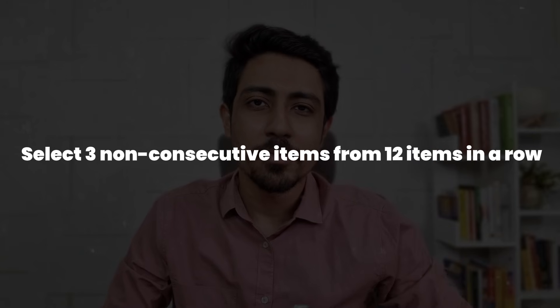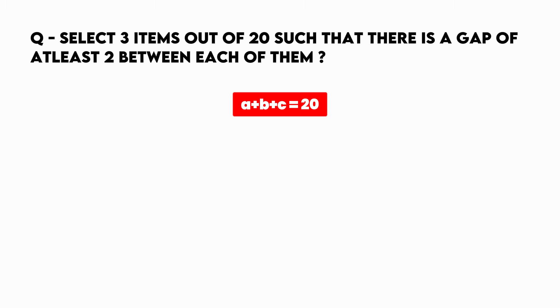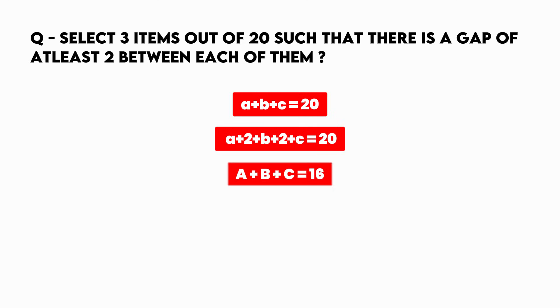Now coming to a typical problem in PnC — selecting non-consecutive items. For example: select 3 items such that there is a gap of 2 between each of them, out of a total of 20 items. Here I'll teach you the concept so that no matter what the gap is, you can use the same method. Write A + B + C = 20. Since there's a gap of 2 between each pair, write plus 2 between A and B, and plus 2 between B and C. Move it to the right side: A + B + C = 16. So your answer will be 16C3 for this problem. If instead you're asked to select 3 non-consecutive items (gap of 1) from 20, it becomes A + B + C = 18, so your answer would be 18C3.